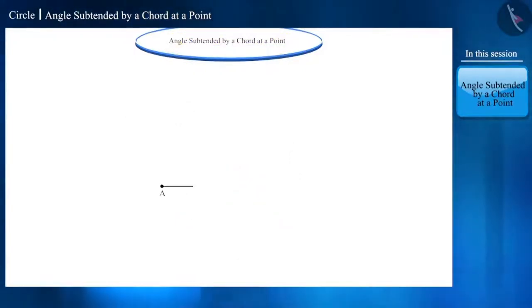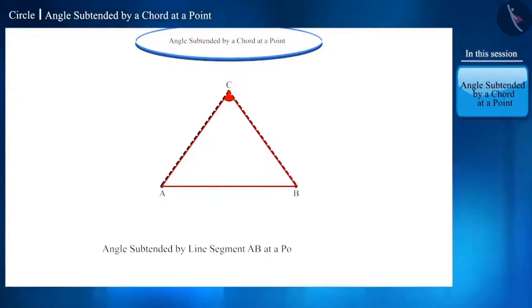If we draw a line segment AB and take a point C which is not on this line segment AB, and if we join both ends of this line segment with point C, then angle ACB will be called an angle subtended by line segment AB at point C.